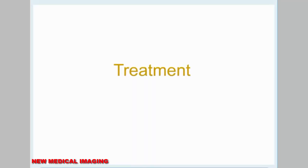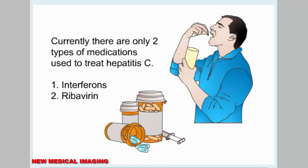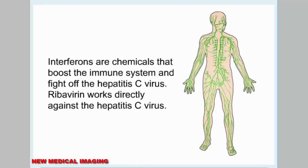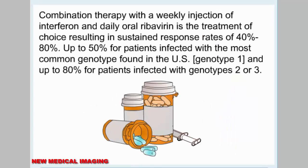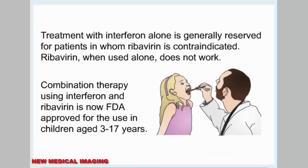Treatment. Currently, there are only two types of medications used to treat hepatitis C: interferons and ribavirin. Interferons are chemicals that boost the immune system and fight off the hepatitis C virus. Ribavirin works directly against the hepatitis C virus. Combination therapy with a weekly injection of interferon and daily oral ribavirin is the treatment of choice, resulting in sustained response rates of 40 to 80 percent — up to 50 percent for patients infected with genotype 1, the most common in the U.S., and up to 80 percent for patients infected with genotypes 2 or 3. Treatment with interferon alone is generally reserved for patients in whom ribavirin is contraindicated. Ribavirin, when used alone, does not work.